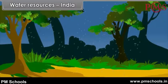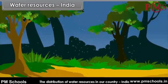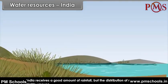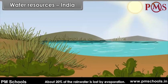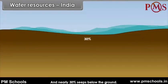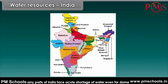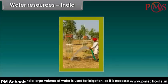Water resources in India: India receives a good amount of rainfall, but the distribution of rainfall is highly uneven. About 20% of the rainwater is lost by evaporation and nearly 30% seeps below the ground. Many parts of India face acute shortage of water even for domestic use. In India, a large volume of water is used for irrigation, as it is necessary to raise crops.